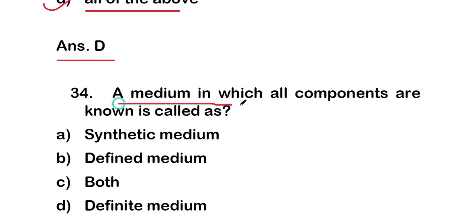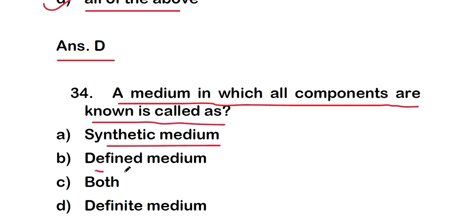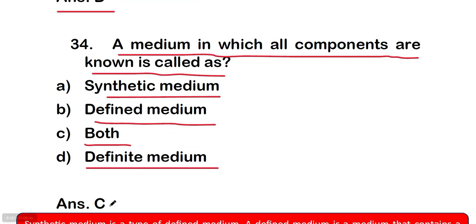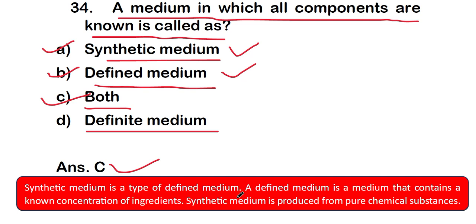Question 34: a medium in which all components are known is called — option C — both synthetic media and defined media. A defined media contains known concentrations of ingredients, and synthetic media is produced from pure chemical substances. Synthetic media is a type of defined media, where all medium concentrations are known.